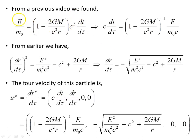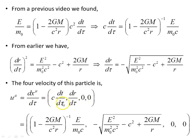From the previous video, the energy per unit rest mass gives us c·(dt/dτ). From earlier, (dr/dτ)² gives us this expression, and taking the negative square root because the particle is falling inwards — the distance from the source is decreasing — we have the negative sign. The four-velocity u^μ = dx^μ/dτ is evaluated: we know c·(dt/dτ) and dr/dτ, and since it's pure radial motion the angular components are zero. This gives us the four-velocity for the particle falling inwards in the radial direction only.